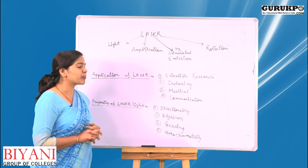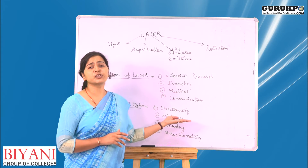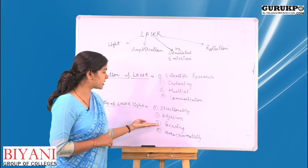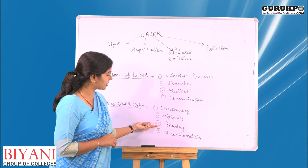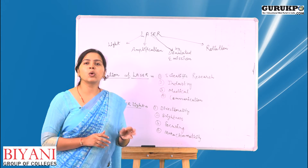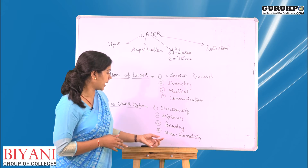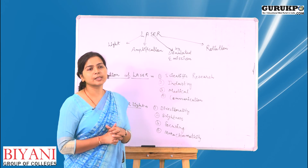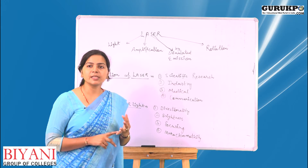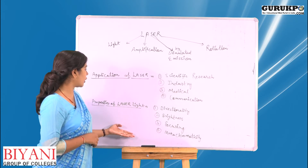Now the properties of laser light: first, directionality is the main feature of the laser beam. Second is brightness — it is a very bright and highly intense beam. Third is focusing — it can be focused into a very, very fine beam, having a low angle of divergence, resulting in low attenuation and low energy loss. And fourth is monochromaticity — the emitted light and incident light are both in the same phase and momentum as well as in amplitude. So these are the properties of laser light.